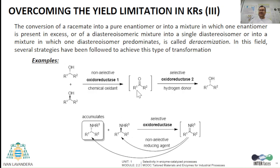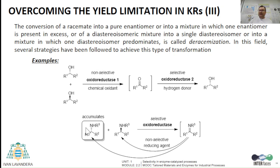Examples of deracimization are, for instance, the transformation of an alcohol racemate into a single enantiomer by combining a non-selective bio- or chemical catalyst with a selective oxidoreductase, or the transformation of a racemic amine into a single substrate enantiomer due to the combination of a selective oxidoreductase with a non-selective reducing chemical.